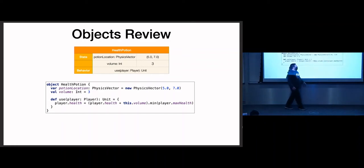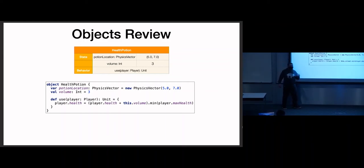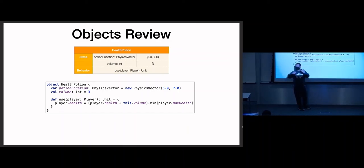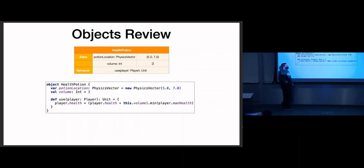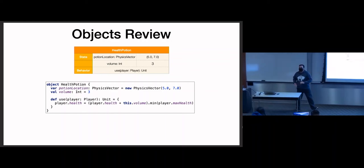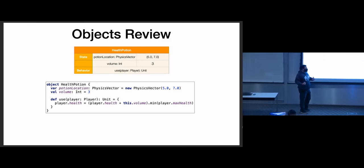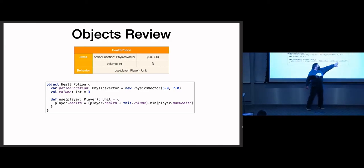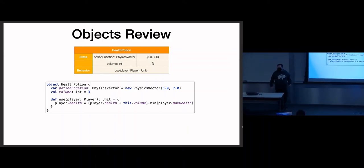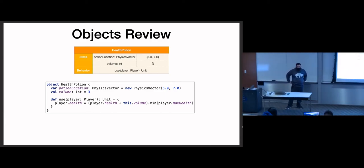Finally, a health potion needs a location and a volume. When a player drinks this potion, they heal an amount equal to the volume — a one-to-one ratio up to the player's max health. I'm using this convenient min method here. Remember every value in Scala is an object. An int is an object that has a method named min, which takes another int and returns the minimum of the two. So I'm calling the min method on the int class, giving it the player's max health, so HP doesn't go over their max.